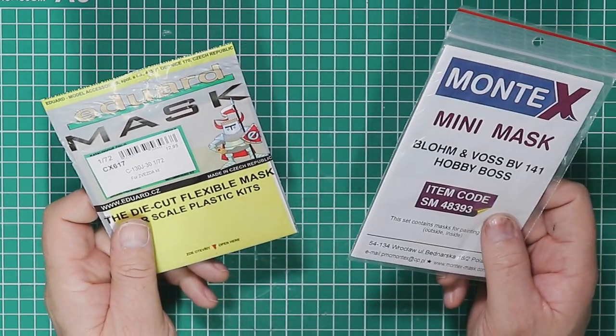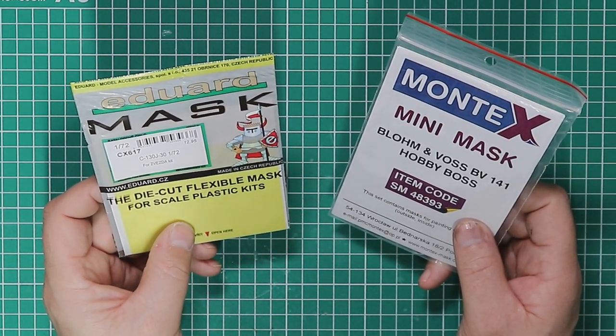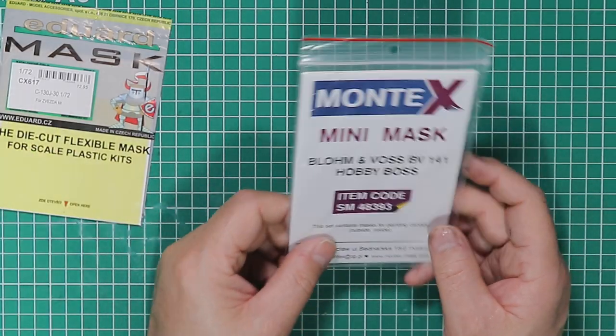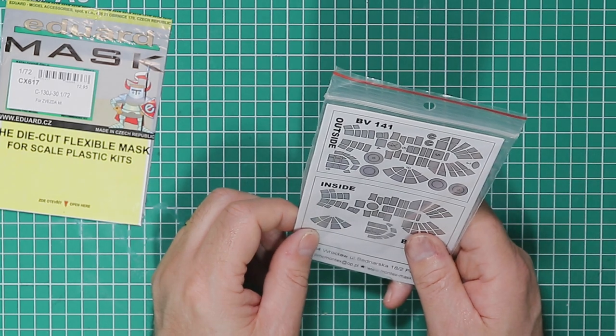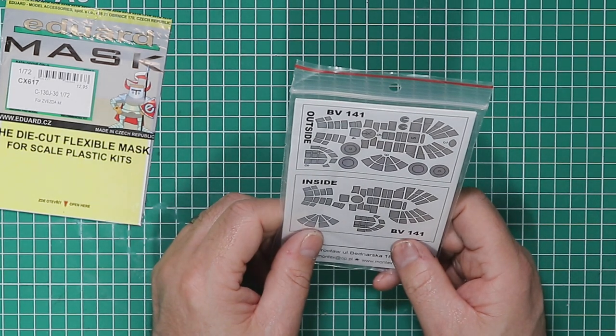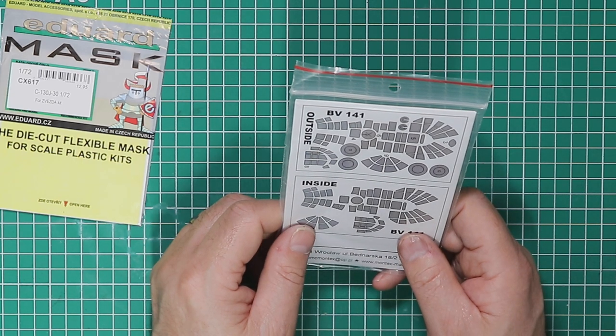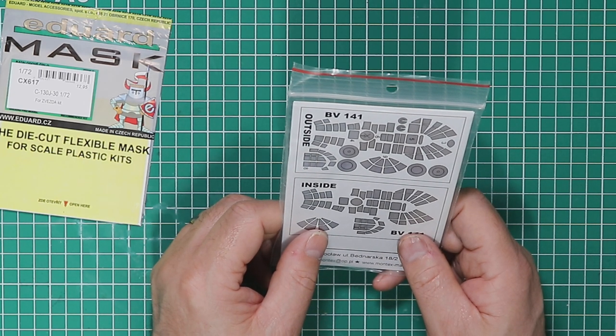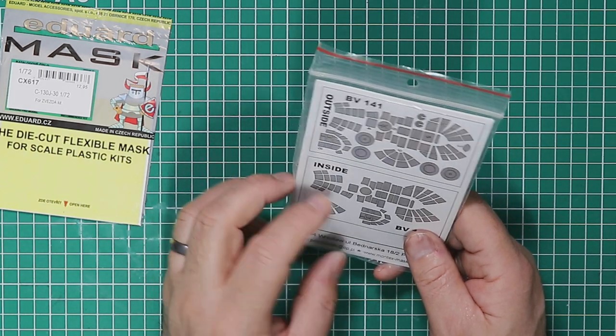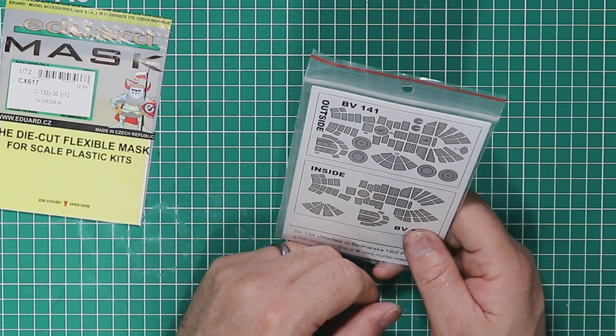Eduard ones are probably slightly better I think personally. They tend to stay stuck down, it is Tamiya tape at the end of the day. Where the Montex ones are vinyl, they tend to peel after a short period of time. Not really helpful if you're one of these modelers that attaches the canopies during the build and leaves them masked up while painting and weathering until the end. They're going to peel off.